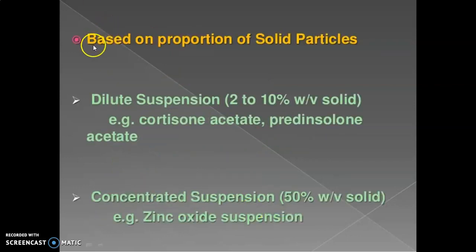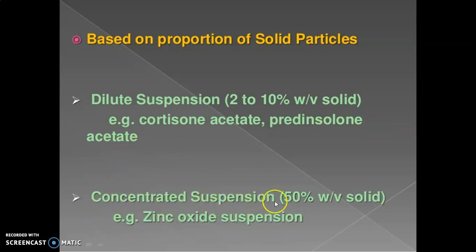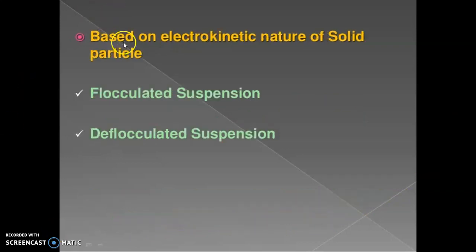The second class of suspension is based on proportion of solid particles. Dilute suspension contains 2 to 10 percent w/v solid — for example, cortisone acetate and prednisolone acetate. Concentrated suspension contains 50 percent w/v solid — for example, zinc oxide suspension.